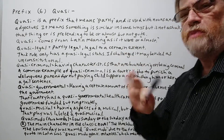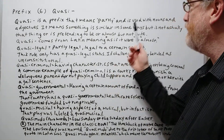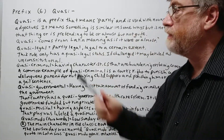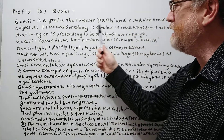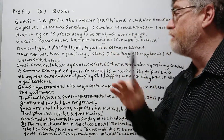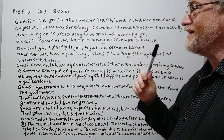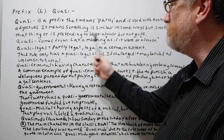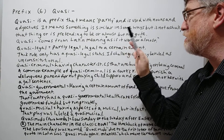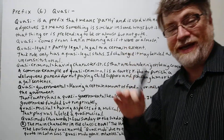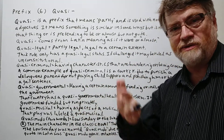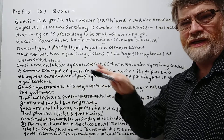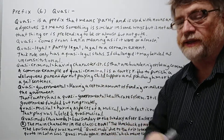Quasi is a prefix that means partly and is used with nouns and adjectives. It means something is similar in some ways but it's not actually that thing, or is pretending to be, or almost but not quite — not exactly. So it's quasi: partially, partly but not really, not completely.